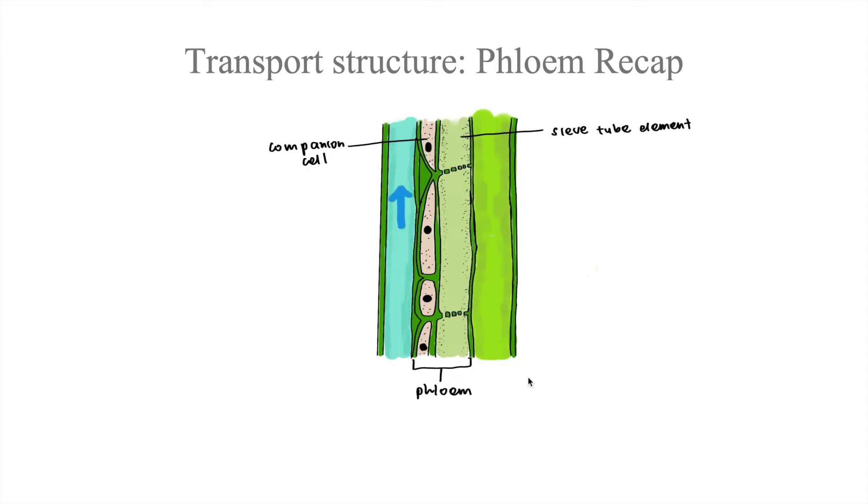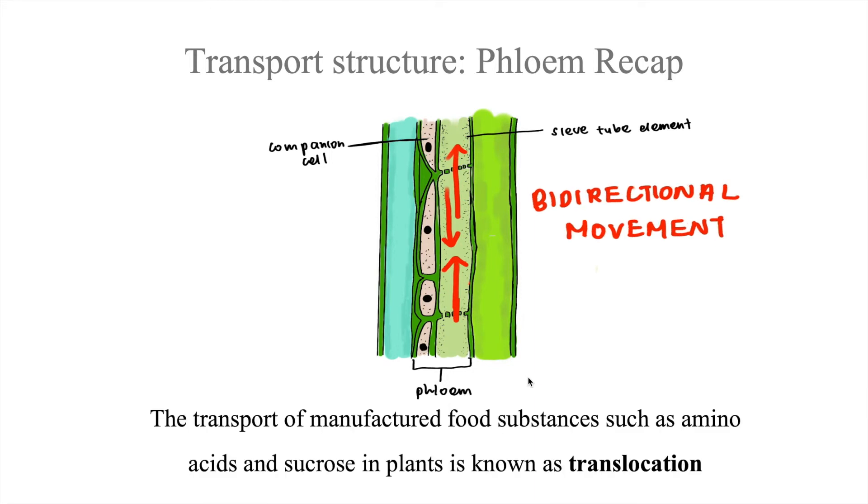Whereas, movement of manufactured food in the phloem is bidirectional. The transport of manufactured food substances such as amino acids and sucrose in the plant is known as translocation.